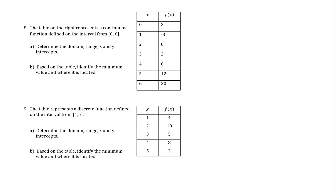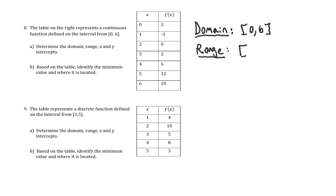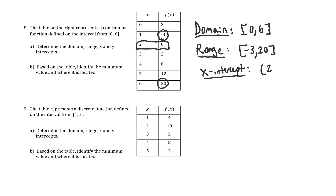Next, we analyze from a table. Number 8 says the table represents a continuous function defined on the interval from 0 to 6. Because it's described as continuous, the domain is that given interval: X from 0 to 6. For the range, the lowest Y value is negative 3 and the highest is 20, so the range is from negative 3 to 20. The X-intercept is at (2, 0), and the Y-intercept — where X equals 0 — is at (0, 2).